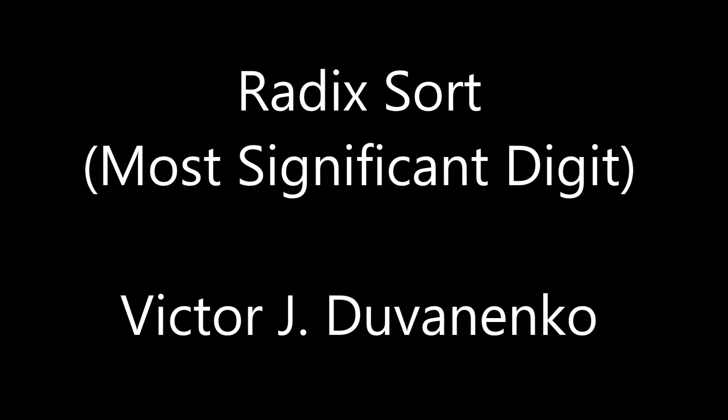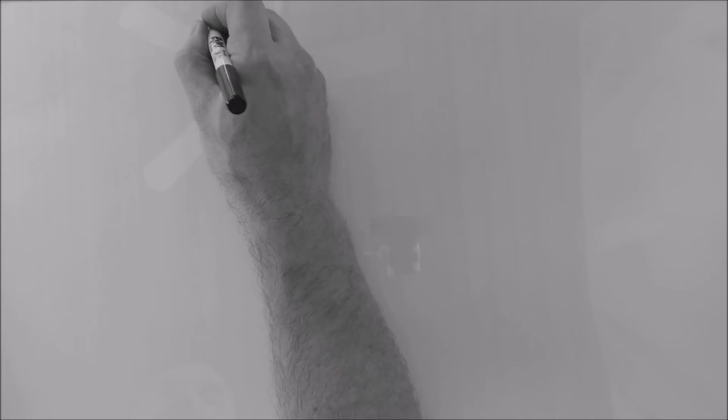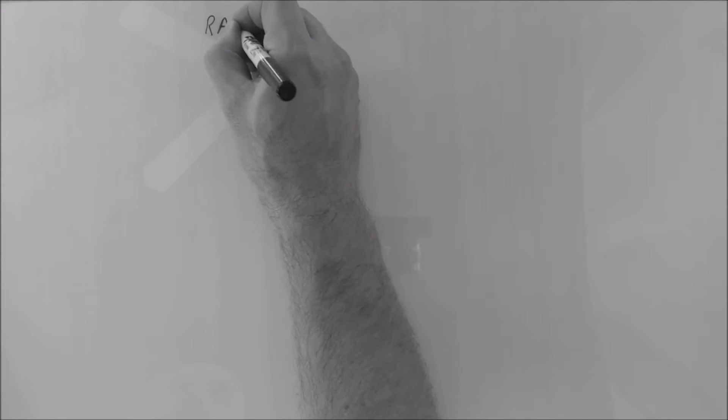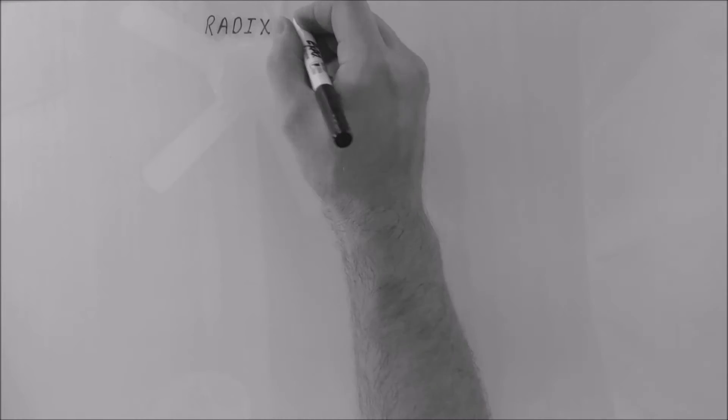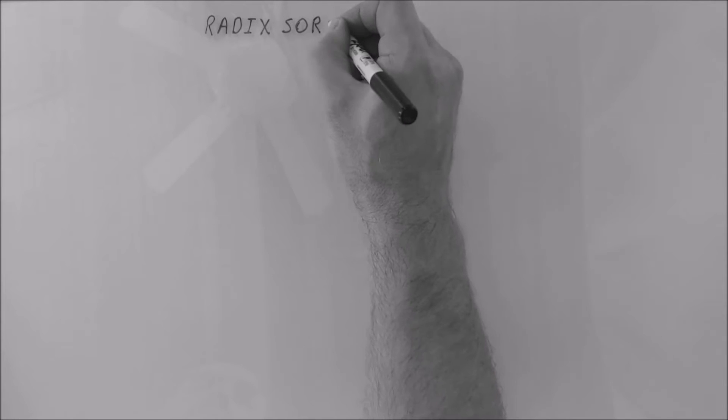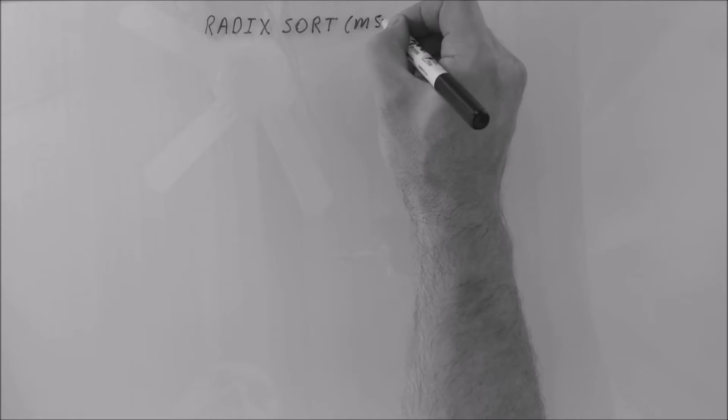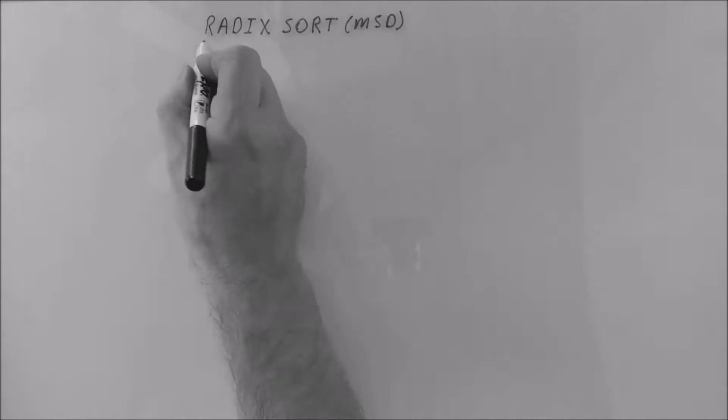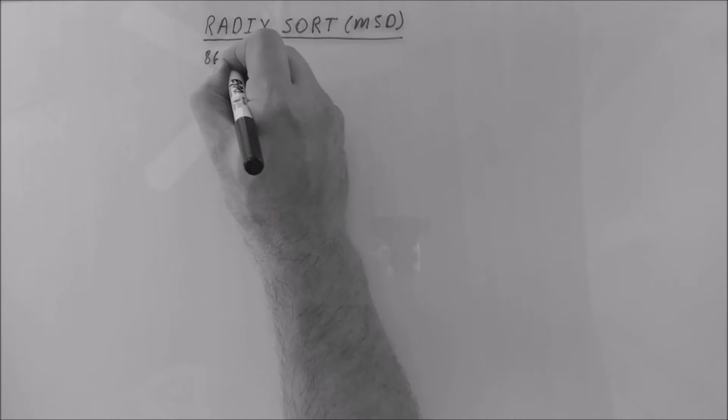Radix sort is one of the fastest sorting algorithms. It can sort not only integers, but other types of data as well. In this video, we'll explore the key strategies radix sort uses to sort quickly.